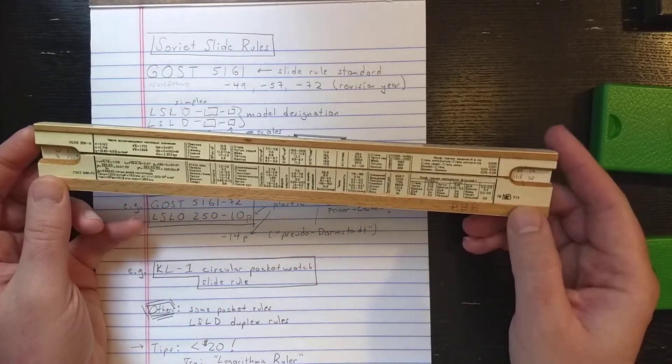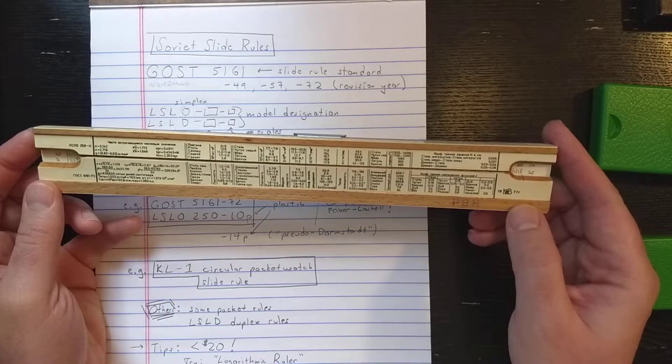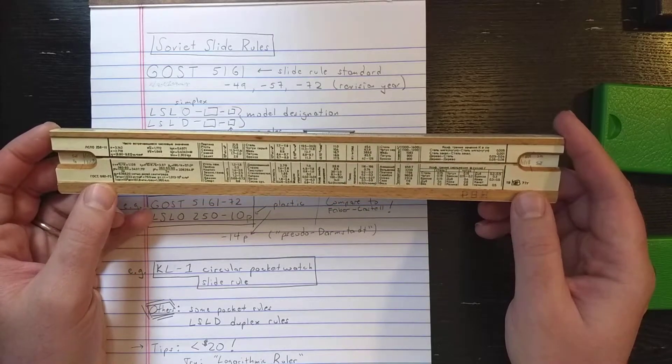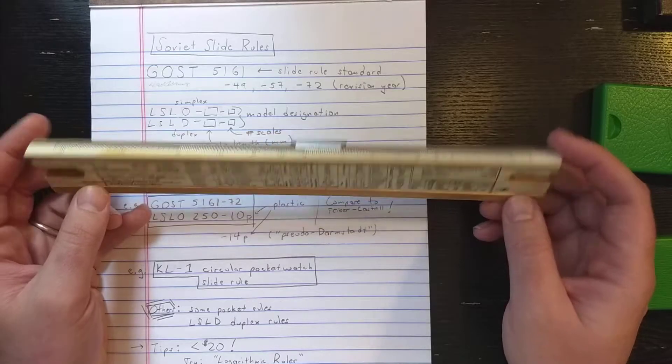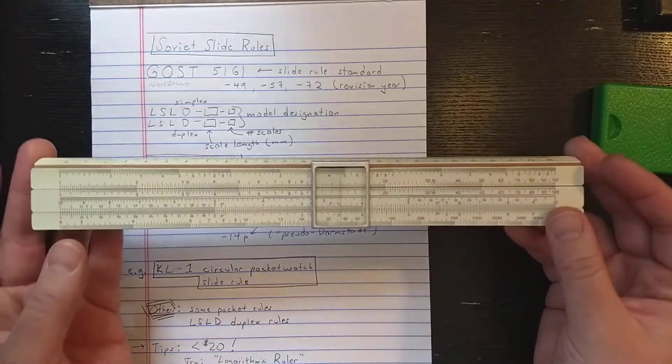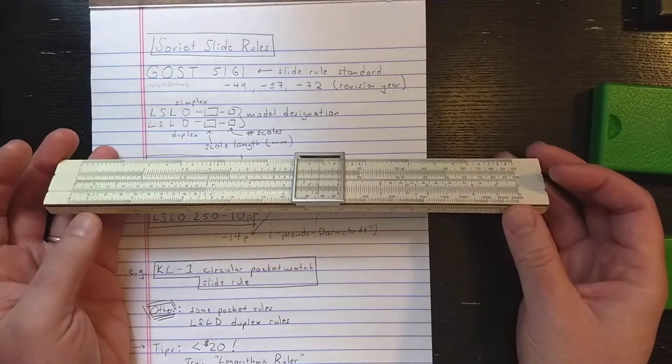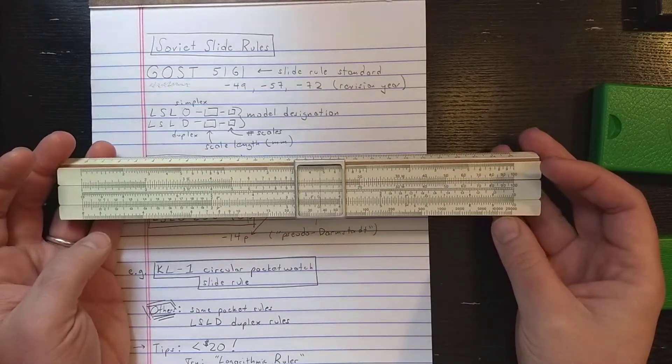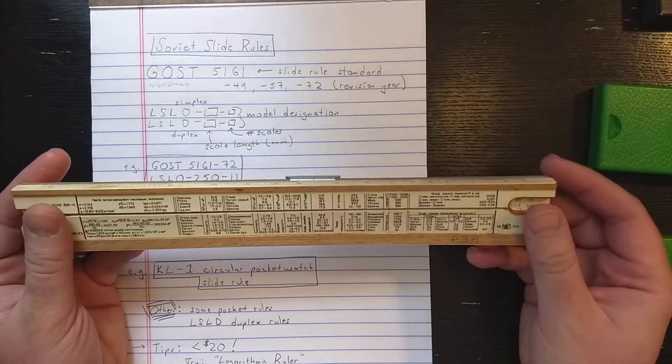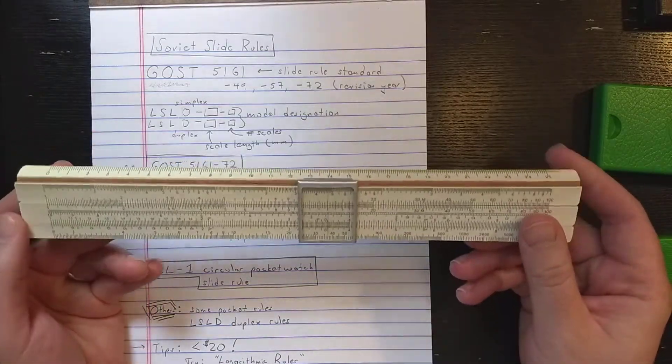You can see the 1977 year of production of this slide rule. So 72 is the year of revision of the standard. 77 is the actual production year, making this one of my newest slide rules. It's an interesting scale set. There's no L, so it's sort of an electro scale set, I would say, with LL2 and LL3. But this is a very easy one to find online.